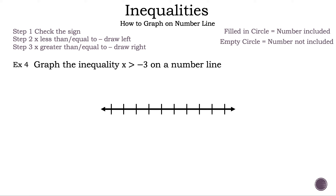Let's move on to example 4. Now let's read the question: Graph the inequality x greater than negative 3 on a number line. We already have our number line. Let's add some numbers — just make sure negative 3 is on there somewhere. Now we need to circle negative 3. Are we going to have a filled-in circle or an empty circle? That's right, an empty circle, because we only have greater than. Since x is on the left side and we have greater than, we draw our arrow to the right.